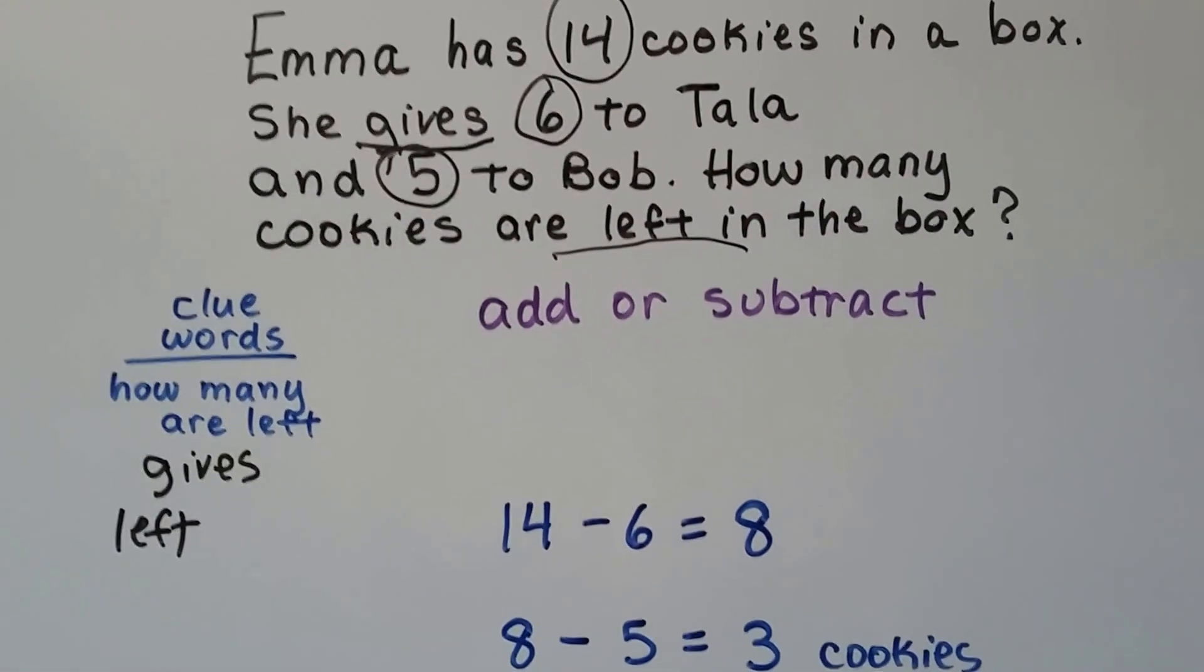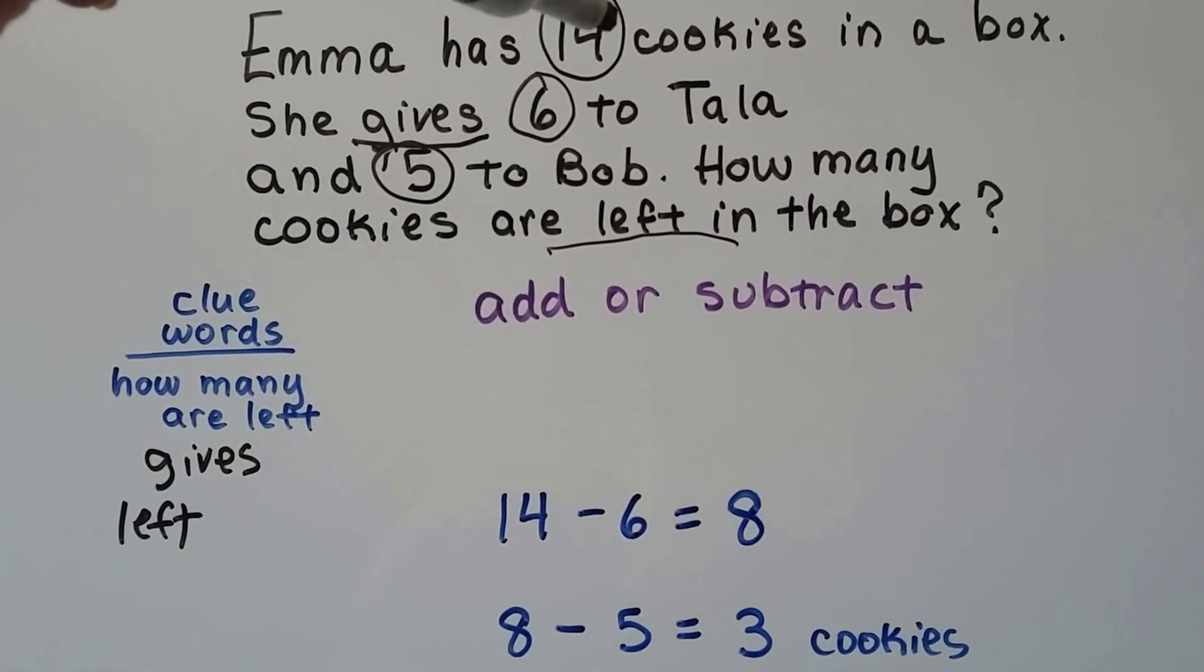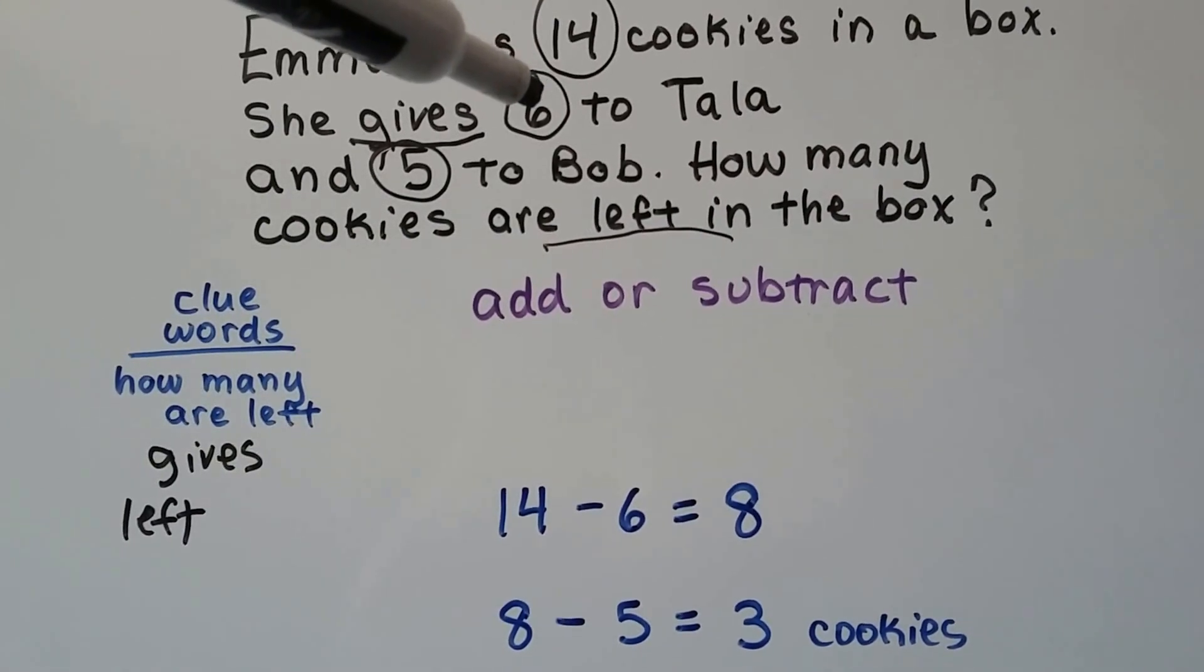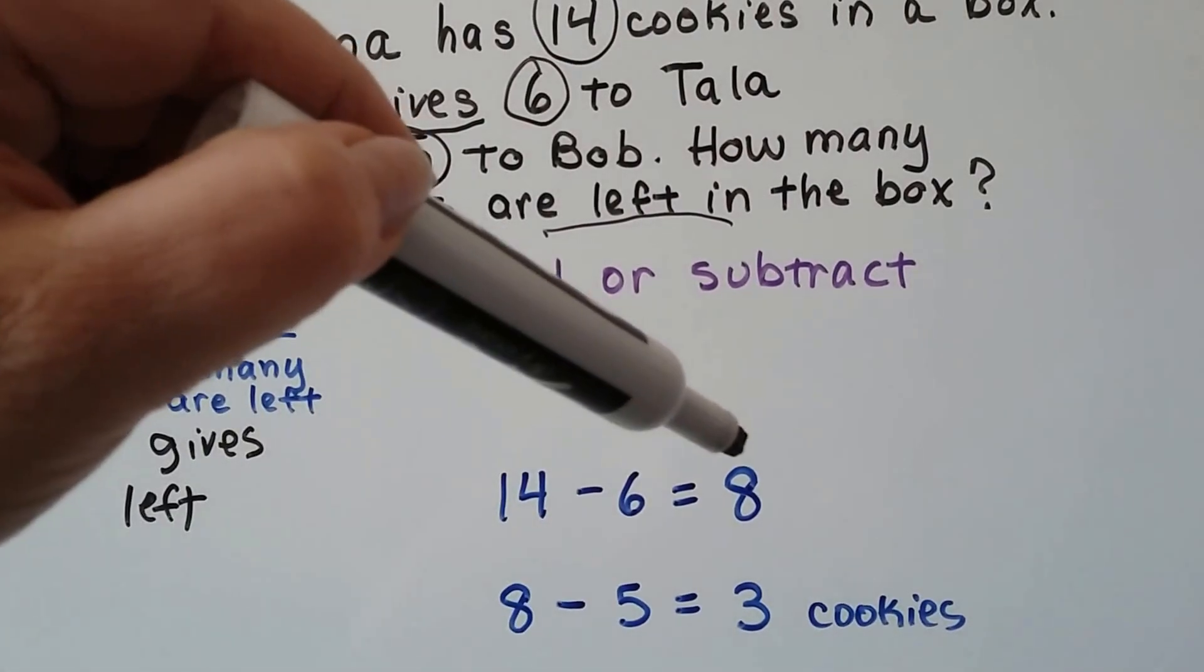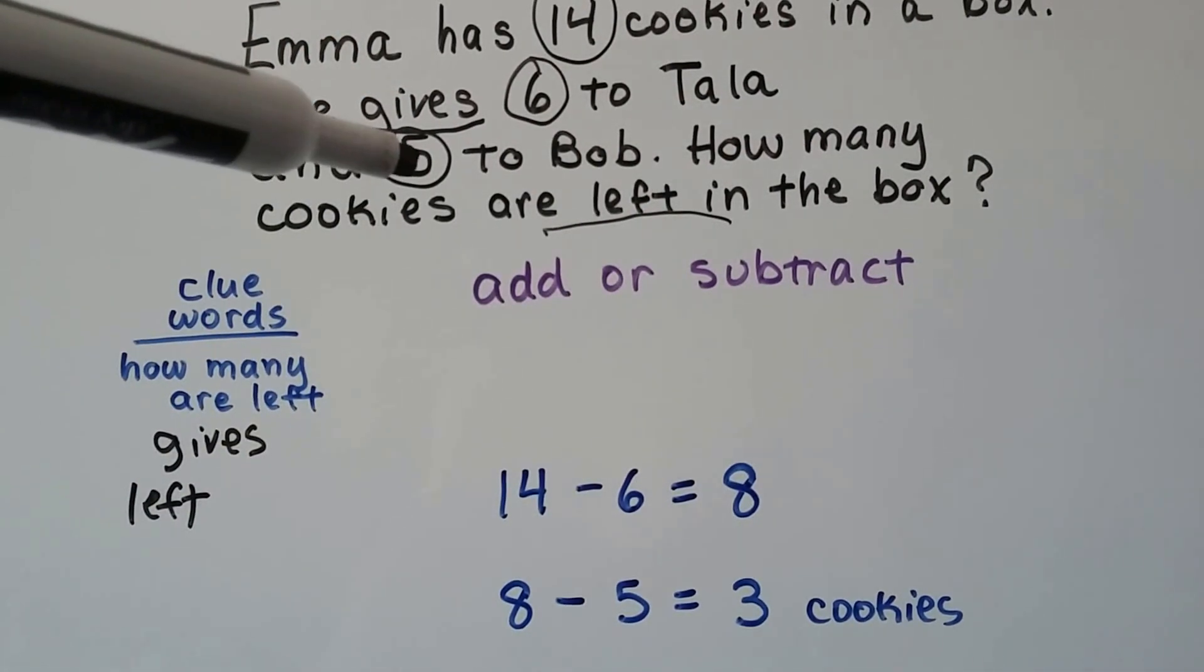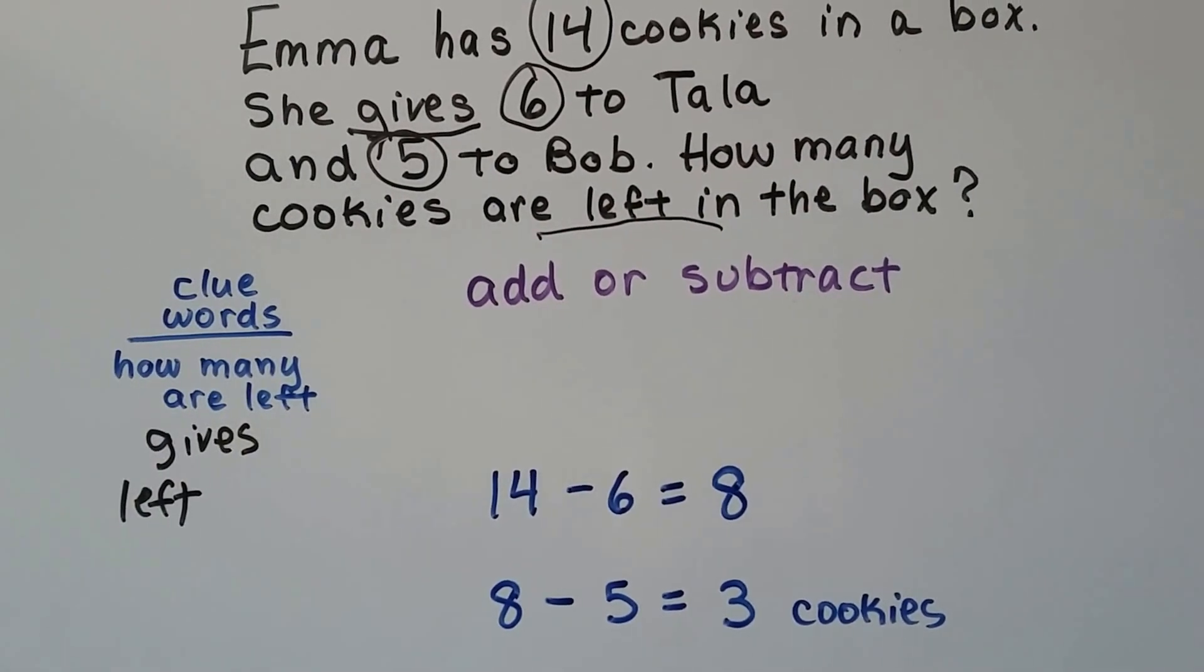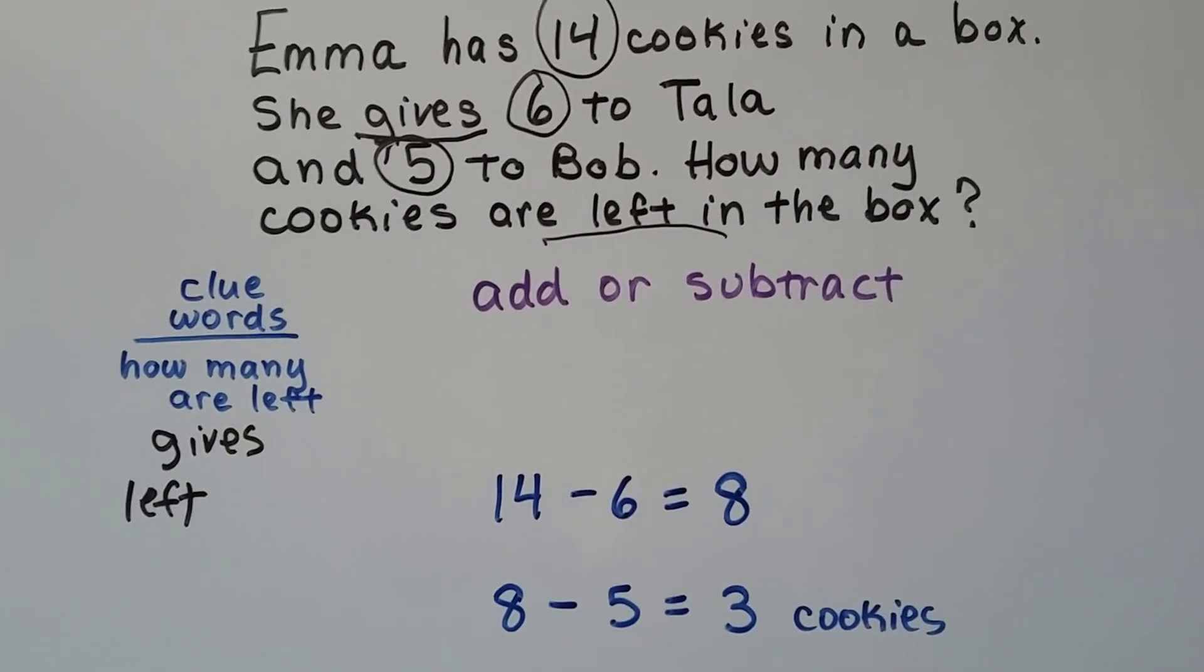So we can either do two subtraction sentences. We take the 14 cookies and we subtract the six that she gave to Tala. Now she's got eight left. Then we subtract five from that eight to find out she's got three cookies left.